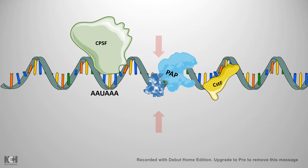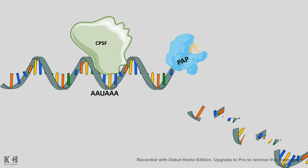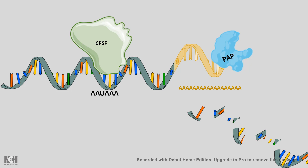Poly-A polymerase binds to the RNA. It is a template-independent polymerase, so it keeps on adding adenine residues to the mRNA, creating a poly-A strand at the end. Something around 50 to 100 nucleotides of adenine residues are added at the end of the mRNA without any template.